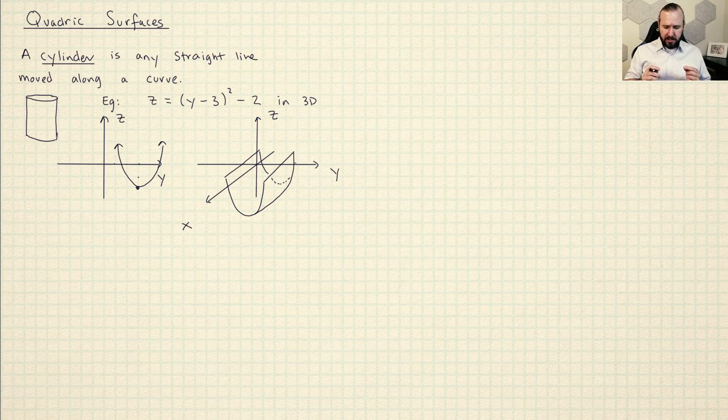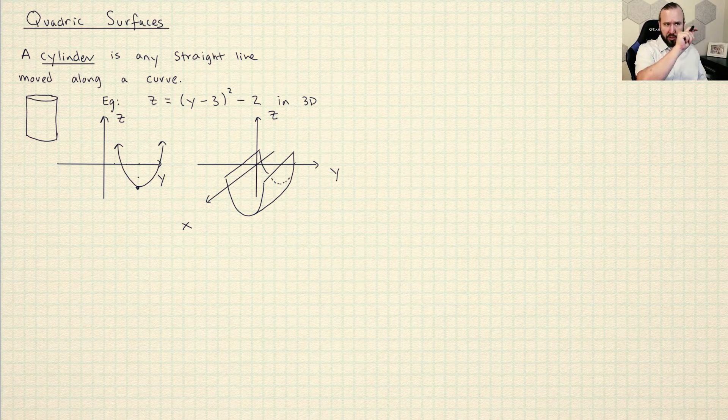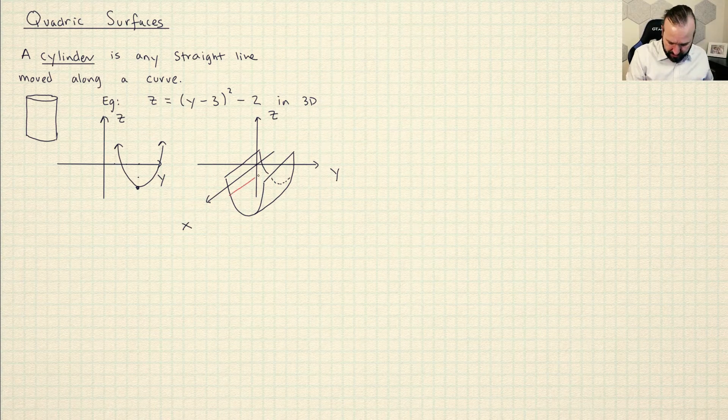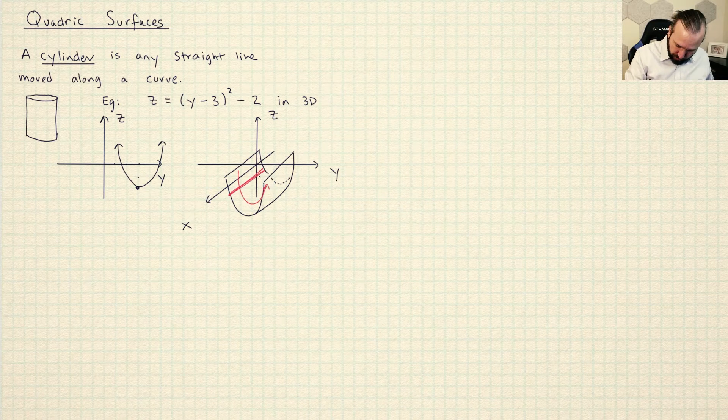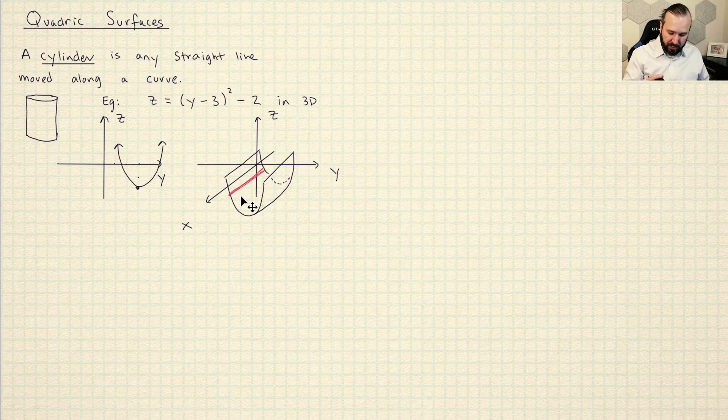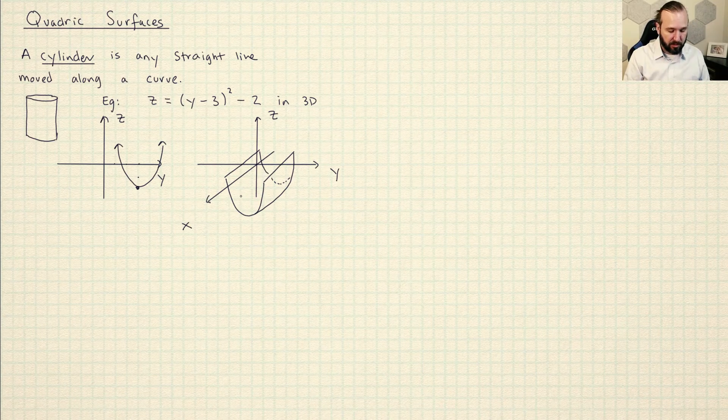So this is a straight line, just all of the lines down the Z axis or sorry, all the lines down the X axis like this are straight lines. And this line has been moved around this curve. So this shape right here, this graph in 3D is the graph of a cylinder.